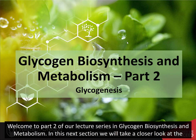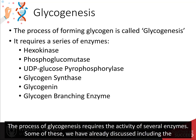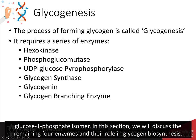Welcome to part 2 of our lecture series in Glycogen Biosynthesis and Metabolism. In this next section, we will take a closer look at the enzymes required for glycogenesis, or the synthesis of glycogen. The process of glycogenesis requires the activity of several enzymes. Some of these we've already discussed, including the hexokinase that phosphorylates the 6' hydroxyl of glucose, and the phosphoglucomutase that converts glucose-6-phosphate to the glucose-1-phosphate isomer. In this section, we will discuss the remaining 4 enzymes and their role in glycogen biosynthesis.